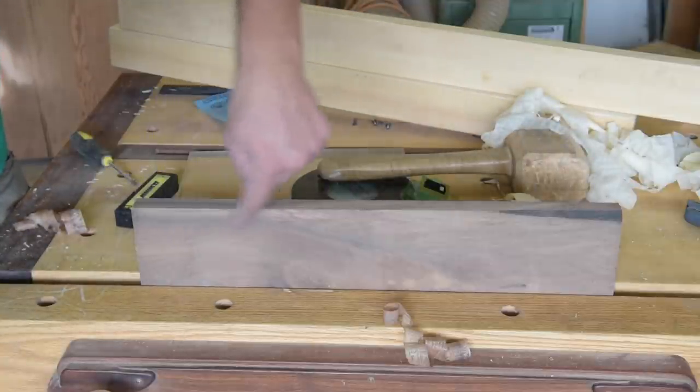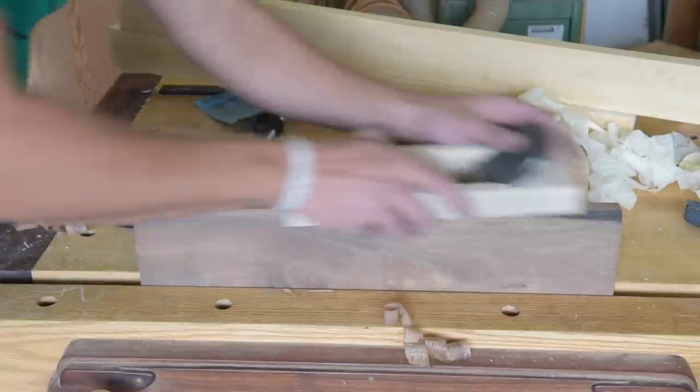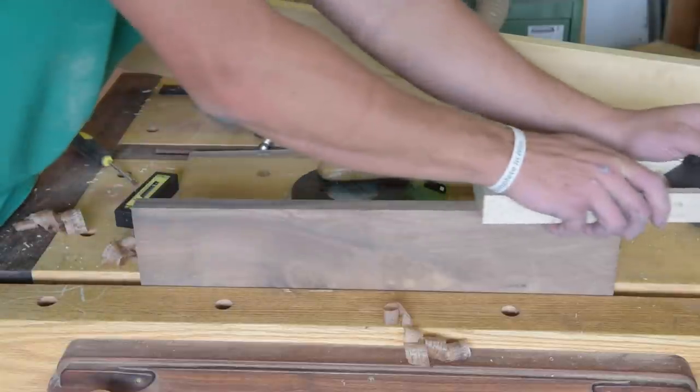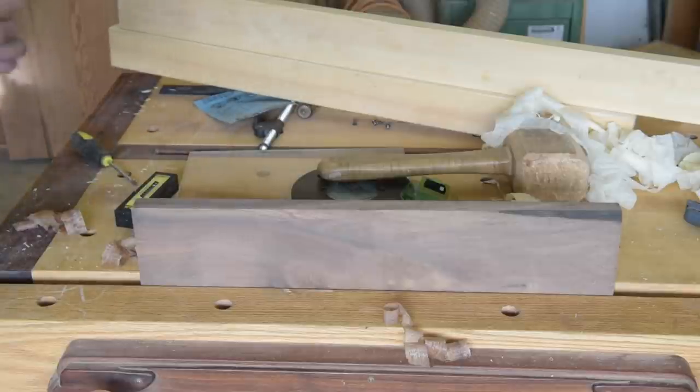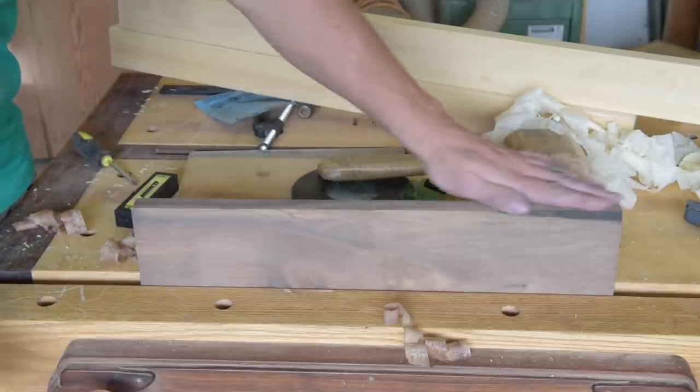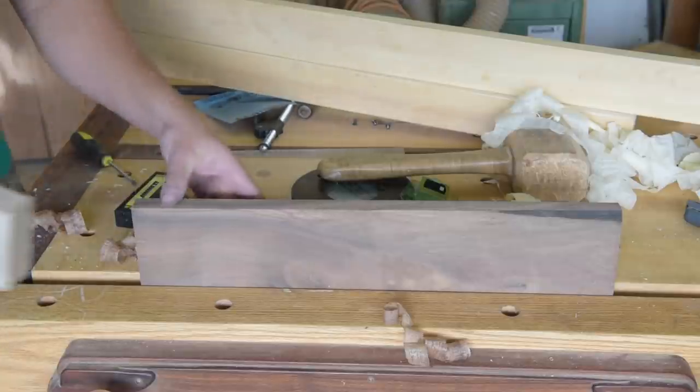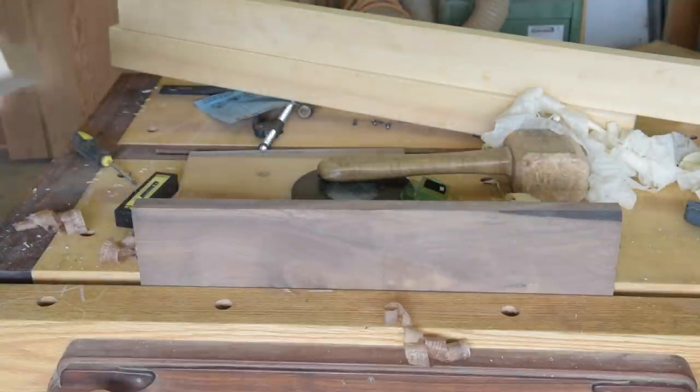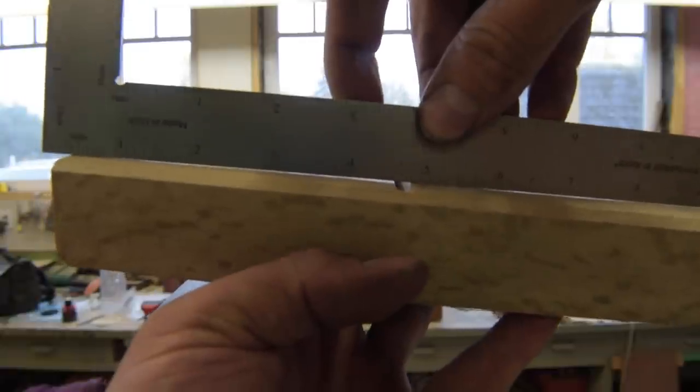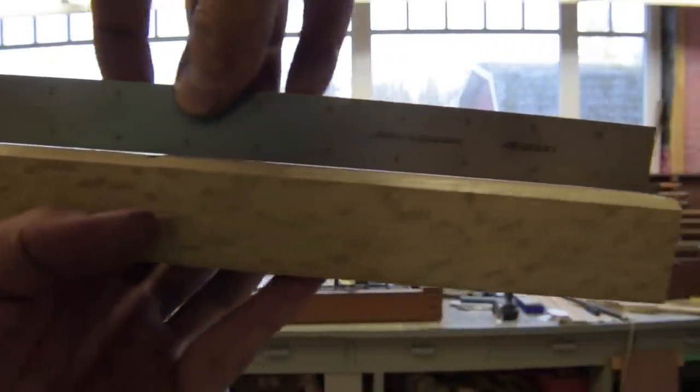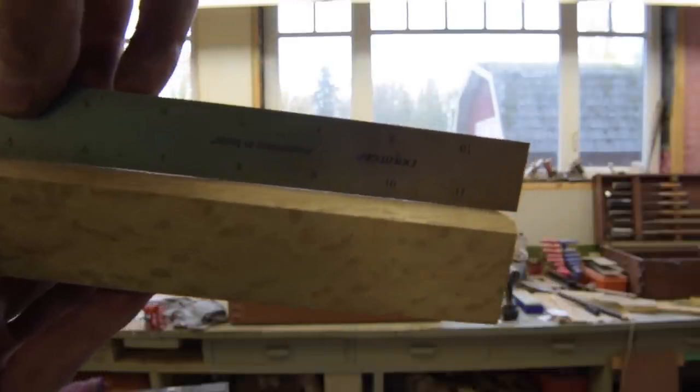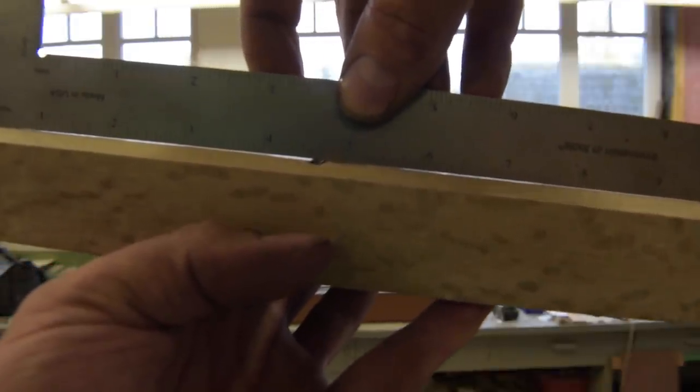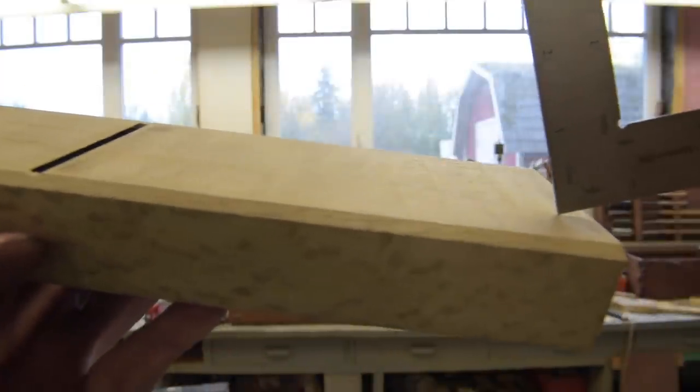With absolutely no tear out. And a pretty, see the grain on here is pretty ornery. Big old knot on the one end. It puts a pretty fine polish on that as well. A little hard to see, but you can kind of get an idea for the light coming through there.